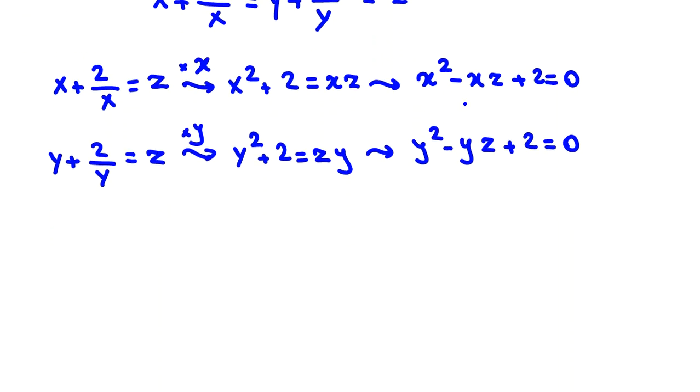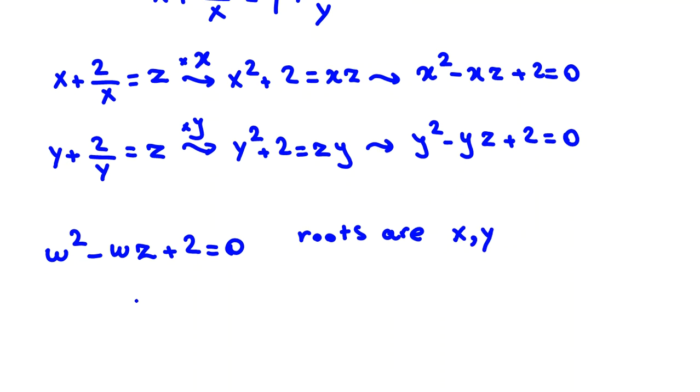If you see, these two things are similar. If I consider another polynomial quadratic formula, w squared minus wz plus 2 equals zero. The roots are what for w, fixing z? We can say for w, roots are x and y.